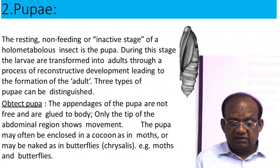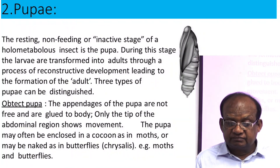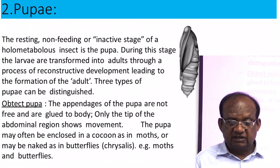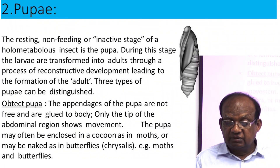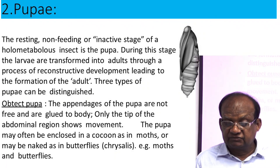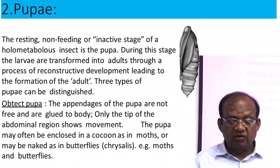In obtect pupa, the appendages of the pupa are not free and are glued to the body. Only the tip of the abdominal region shows movement when we touch the pupa; other regions are motionless. The pupa may often be enclosed in a cocoon, as in moths, or may be naked, as in butterflies. Examples are moths and butterflies for the obtect type of pupa.